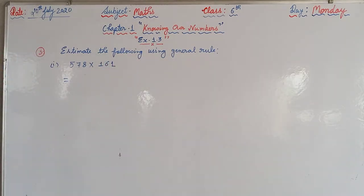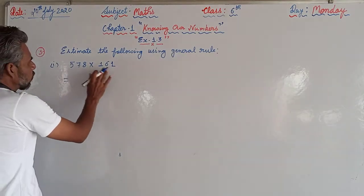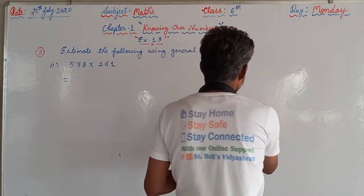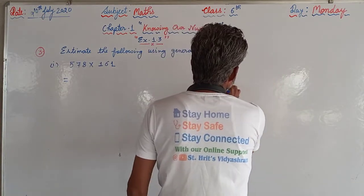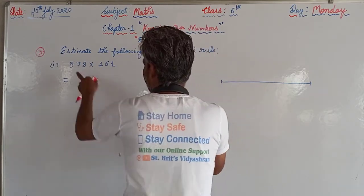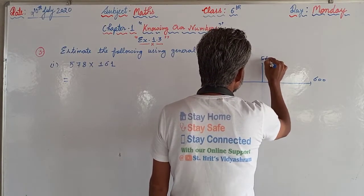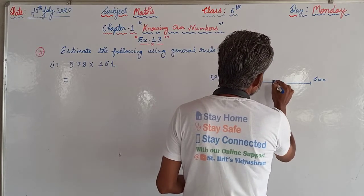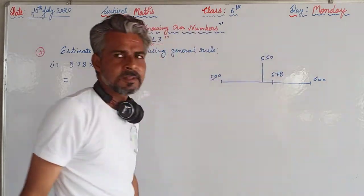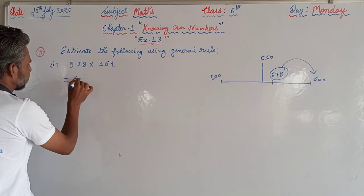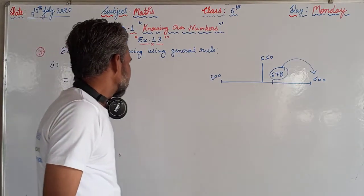So what will we do? We will round off both numbers to the nearest hundred. I told you to see on the number line. Suppose 578 lies between 500 and 600. 578 is on the right-hand side of 550, so it will be rounded off to 600.